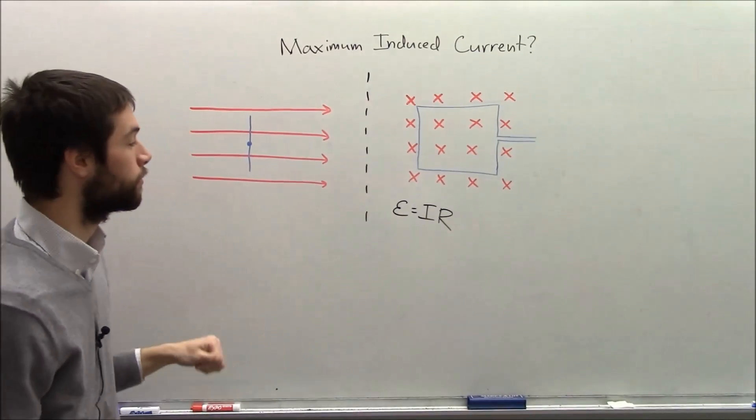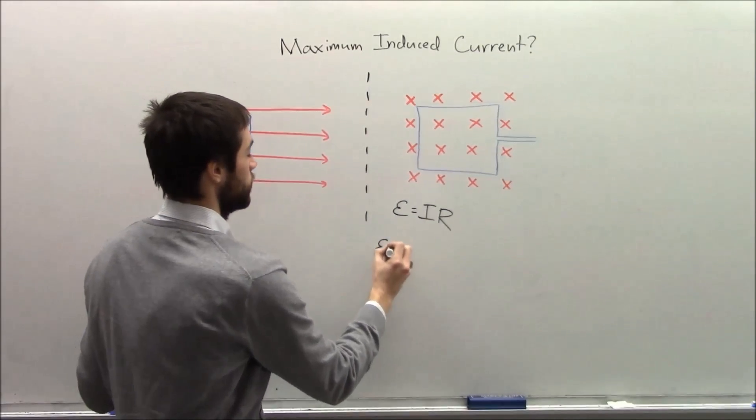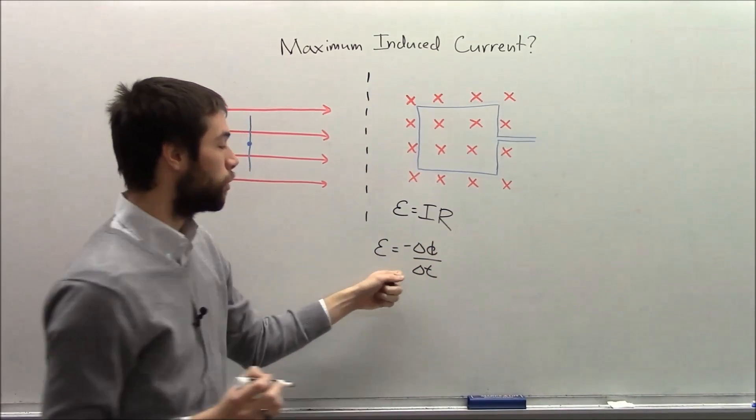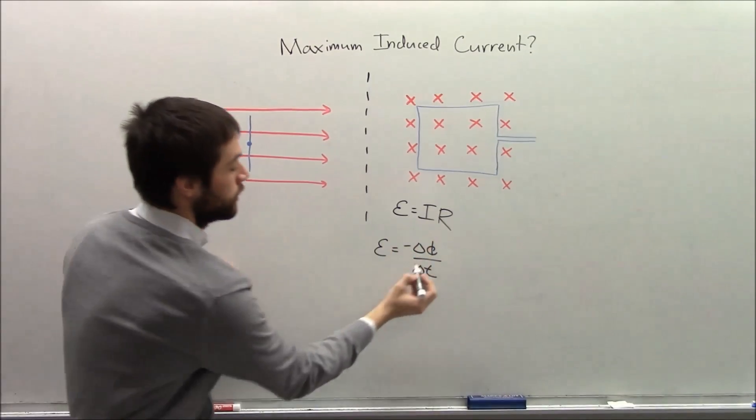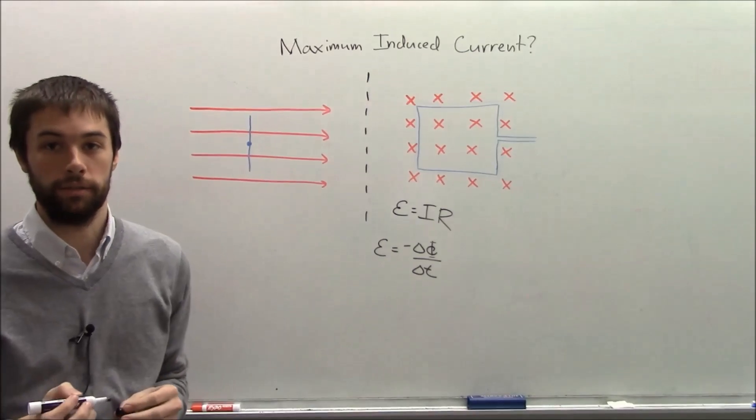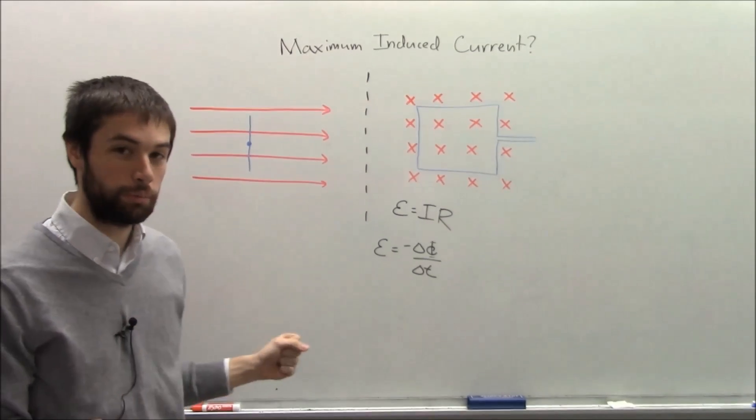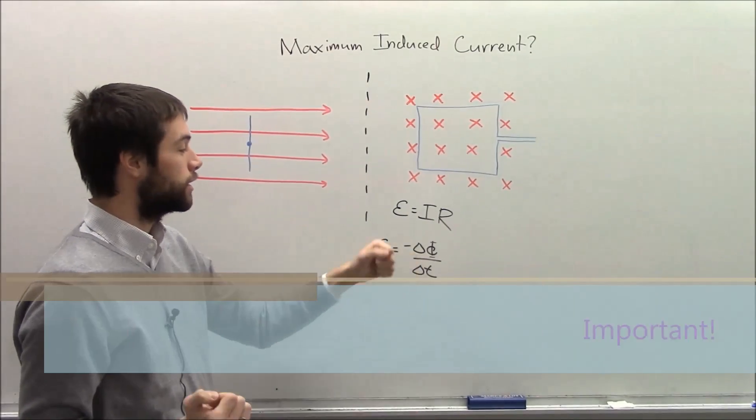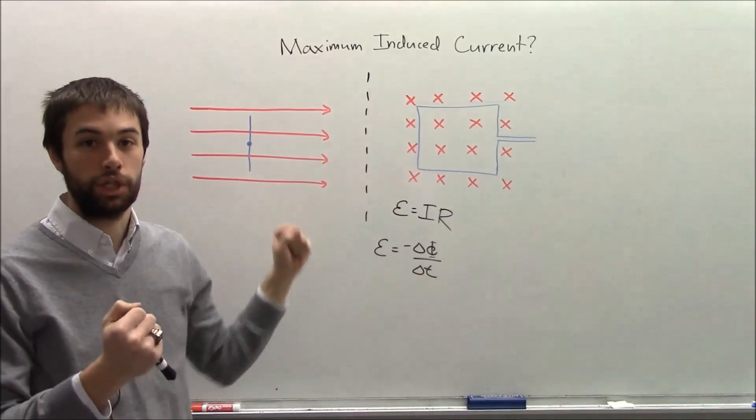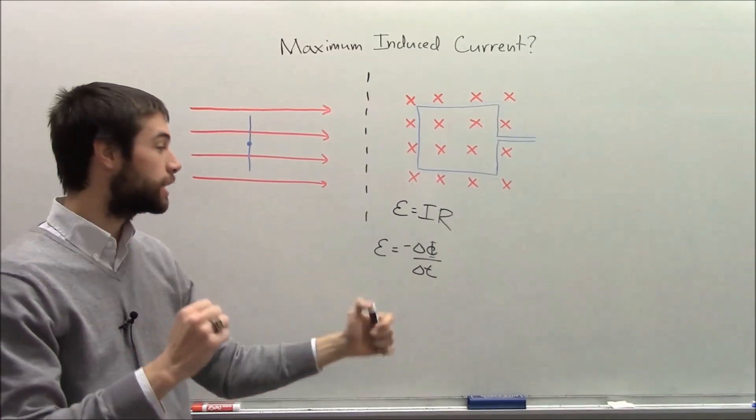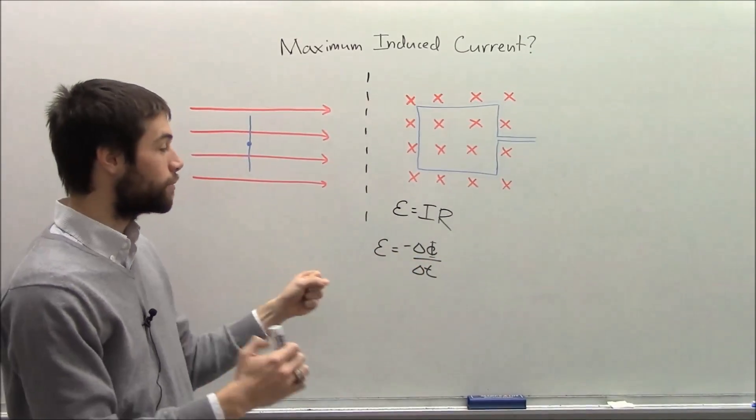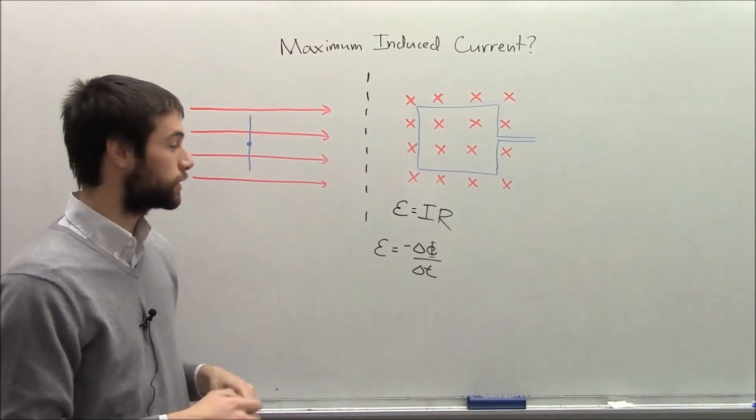We also remember that the induced EMF is proportional to the change in flux, Δφ over the change in time Δt. And this is the crucial part: what we really care about is how fast the flux is changing. It doesn't matter how big the flux is or how small the flux is, all that matters is how fast it changes.